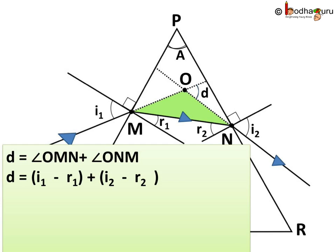Angle D is equal to angle OMN plus angle ONM. Now putting the values of angle OMN and angle ONM, we get angle D is equal to I1 minus R1 plus I2 minus R2.